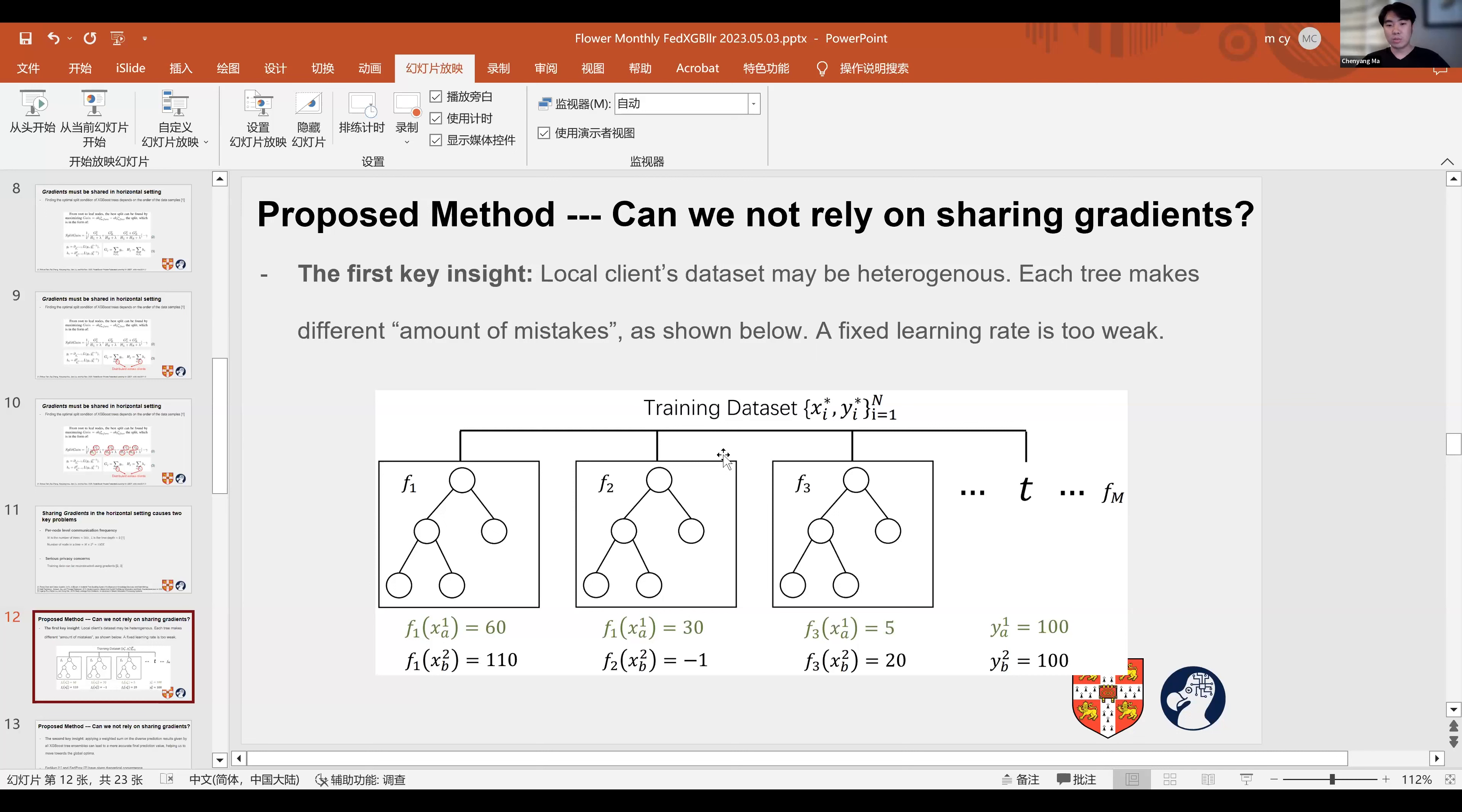Consider the example in this figure. We have an XGBoost model with M trees trained on data sets for regression tasks. We send this model to two other clients and evaluate it on their respective local data sets. Given two data points with the same ground truth of 100, the first tree F1 gives a good initial prediction for data point XB but not for XA. The second and third trees sufficiently correct the error for XA but not for XB. So we may want a higher learning rate for trees F2 and F3 for XA, but a lower learning rate for XB.